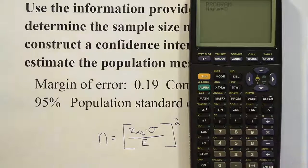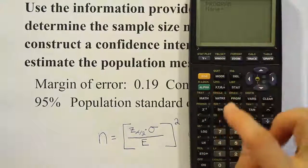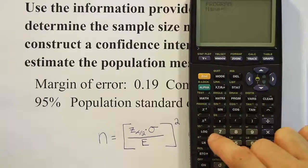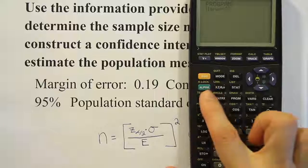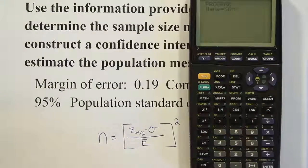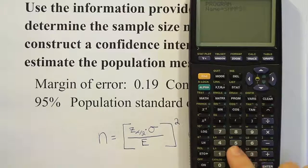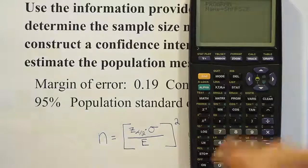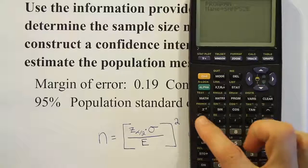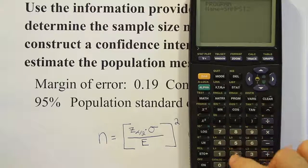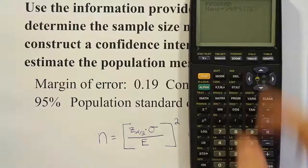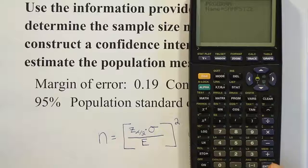I want to name it something useful, so I'll name it "SAMPSIZE." The calculator is already set on alpha input, shown by a blinking A. I'll press the LN key (which has a green S above it) to get S, then A, M, P, and then S, I, Z, E. When it shows the checkered symbol, that means I've used all available letters, so I hit enter and my new program is called SAMPSIZE.